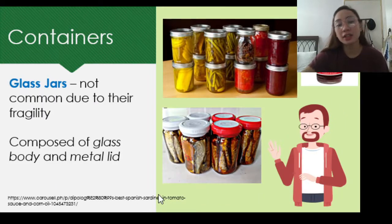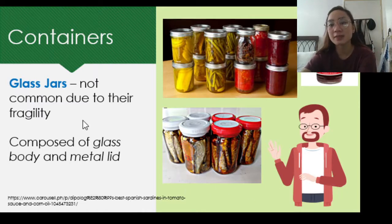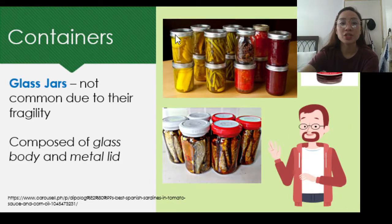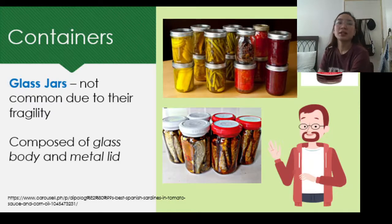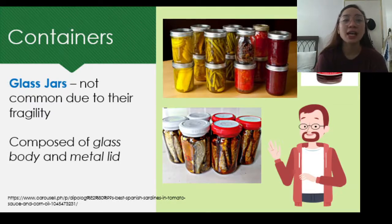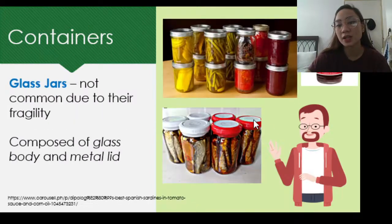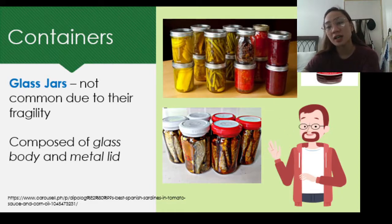Another type of container is glass jars, which you are familiar with from grocery stores — some products sell fruits, vegetables, or dried fish in glass jars. It is not commonly used for commercial processes because it is very fragile and breaks easily. It is composed of a glass body and a metal lid, and usual products include jam and Spanish sardines-type fish.